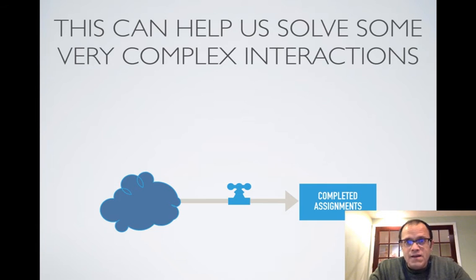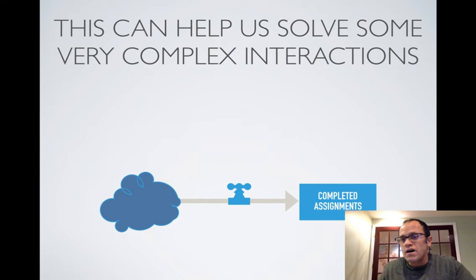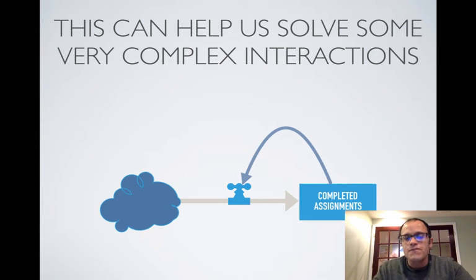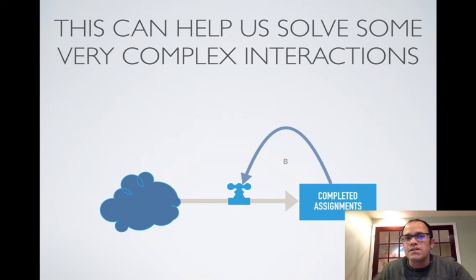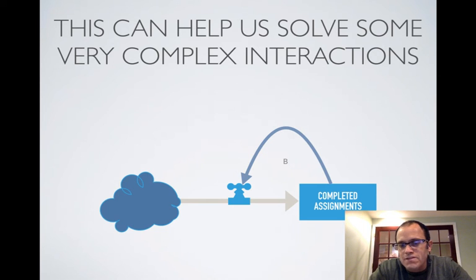There are balancing loops out there too. If you have a pile of homework that you need to get done, you need to make it into completed assignments. A lot of students tell me that as that pile of completed assignments increases, they feel like they've accomplished something — and sometimes they start slowing down the rate of creating new completed assignments. If that's true, that's what we call a balancing loop on the right-hand side, one that reaches a steady state eventually.